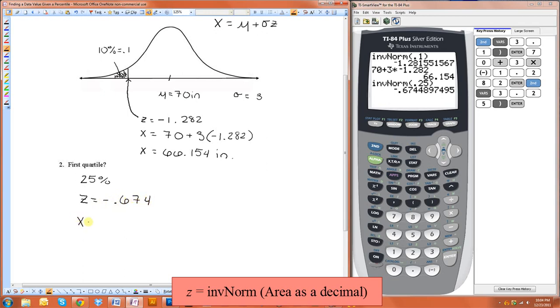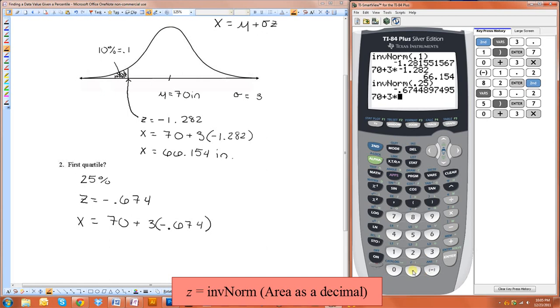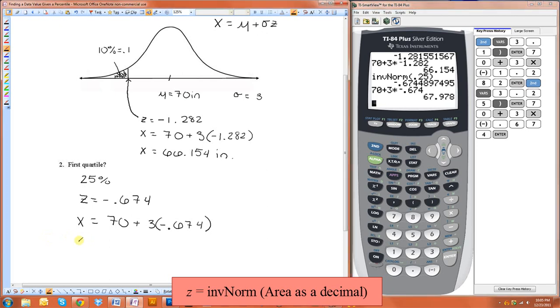Then we just need to use the formula up here to find our x. It's just going to be 70 plus 3 times negative 0.674. So x is equal to 67.978 inches. That means men who are 67.978 inches are taller than 25% of other men in America.